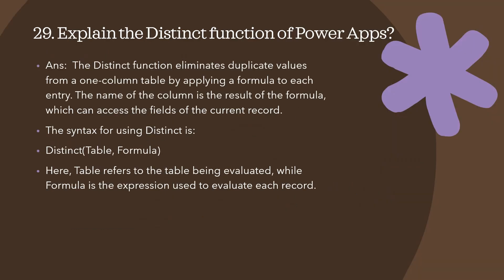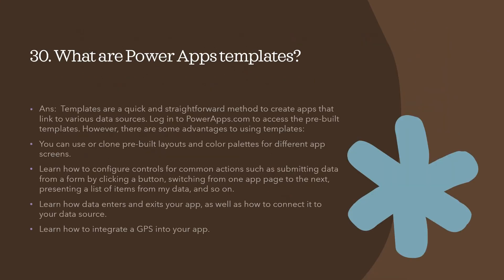Question 29: explain the Distinct function in Power Apps. The Distinct function eliminates duplicate values from a one-column table by applying a formula to each entry; it is only available for one-column tables. The column name is the result of the formula, which can access the fields of the current record. The syntax is Distinct(tableName, formula), where table is the table being evaluated and formula is the expression used to evaluate each record to remove duplicates.